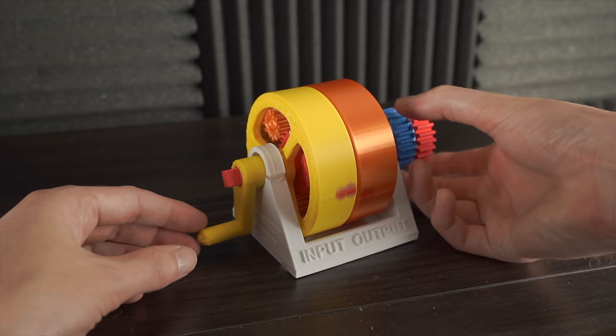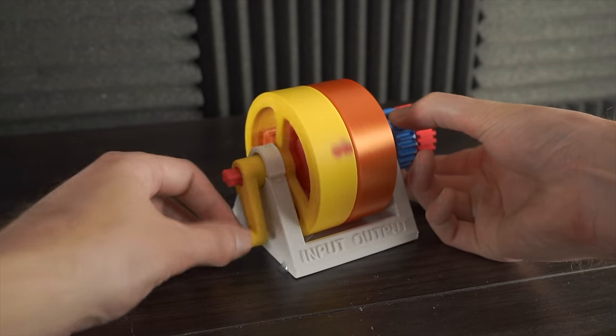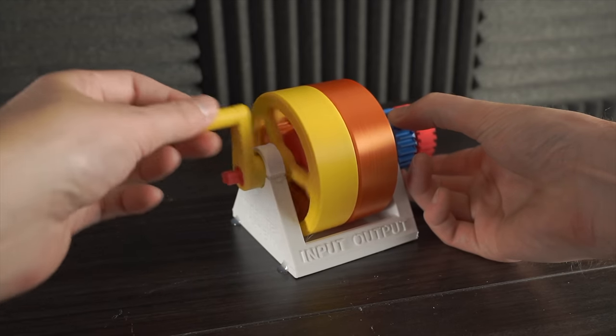To do that, we can start in first gear by holding the blue handle in place. You can see the orange output ring is spinning much slower than the input.